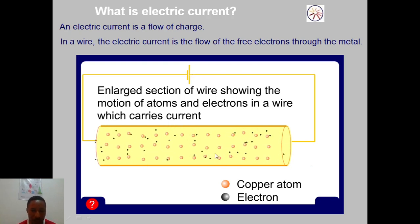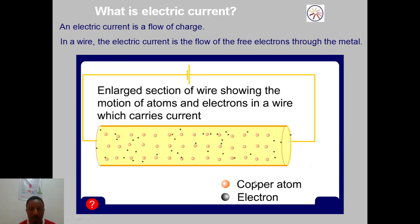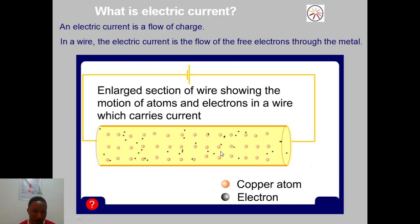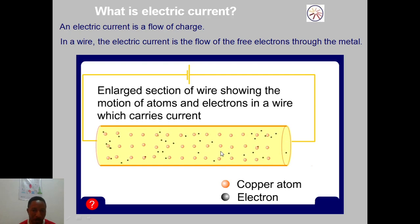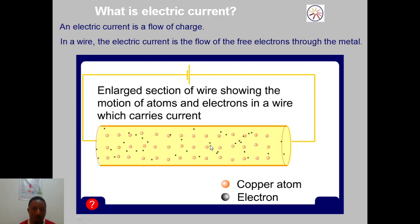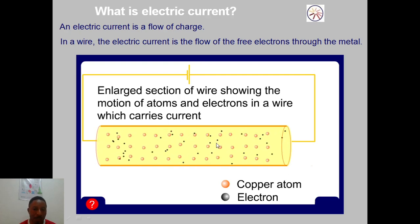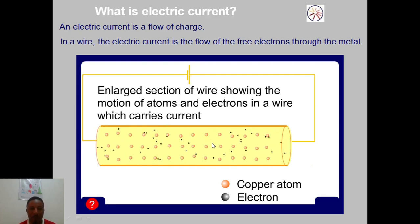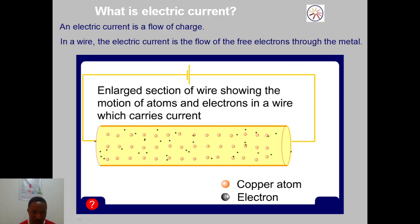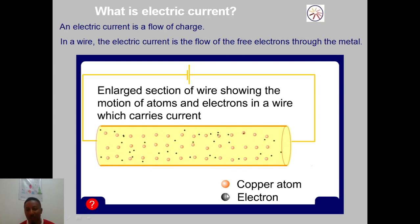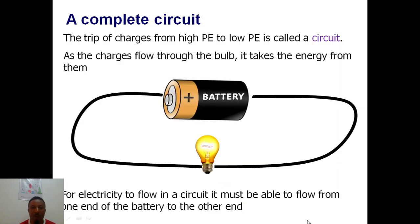Notice the copper atoms — what's happening to them is collision. They are vibrating due to collisions from the electrons. Of course, where there is collision there is going to be heat — but that's a lesson for another time.